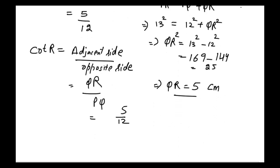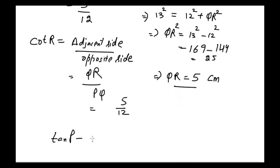Tan P minus cot R. Putting the value of tan P, which is 5/12, and cot R, which is also 5/12, we get 5/12 - 5/12 = 0.